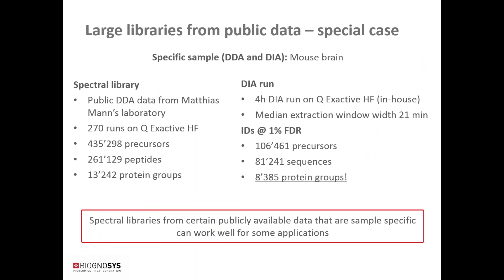This clearly shows the advantage of a sample-specific library and that larger is not necessarily better. However, there are cases where a large public dataset helps. In an in-house experiment, we used public DDA data from the laboratory of Matthias Mann — 270 runs done on a Q Exactive — and created a spectral library from these runs. Analyzing mouse brain samples in-house with a four-hour DIA run on a Q Exactive HF, we identified over 8,000 proteins.